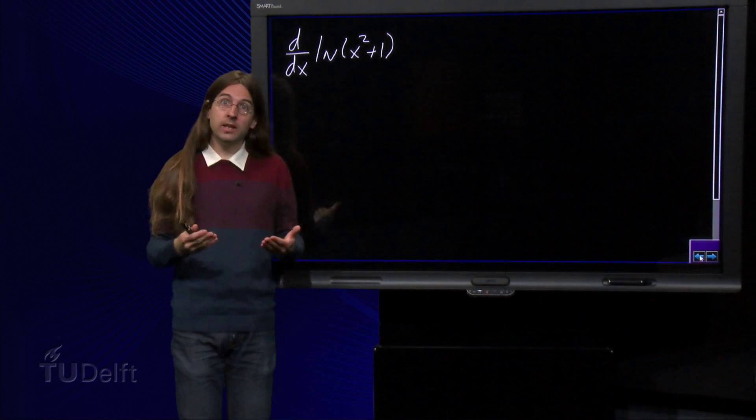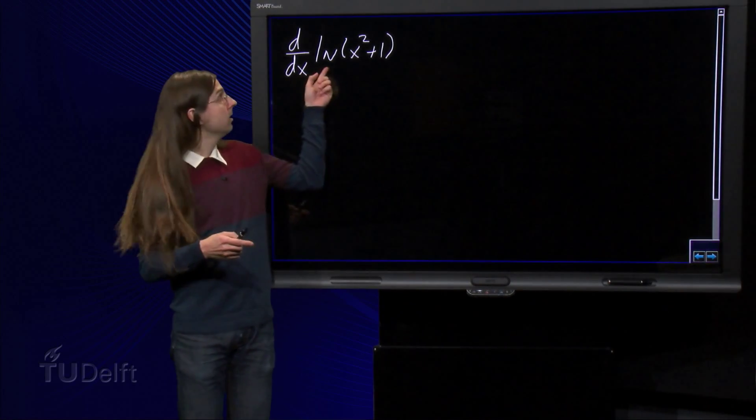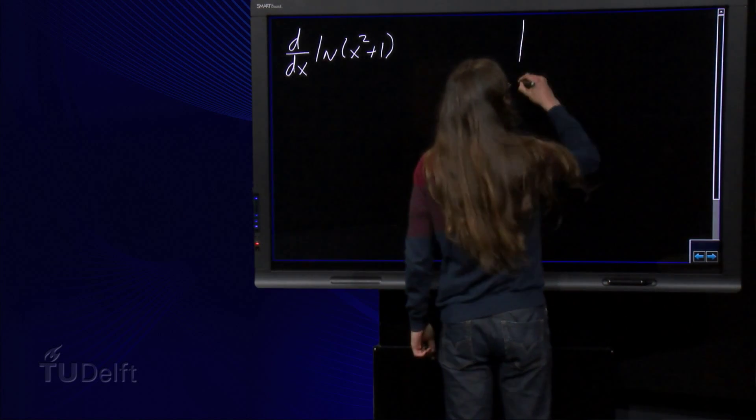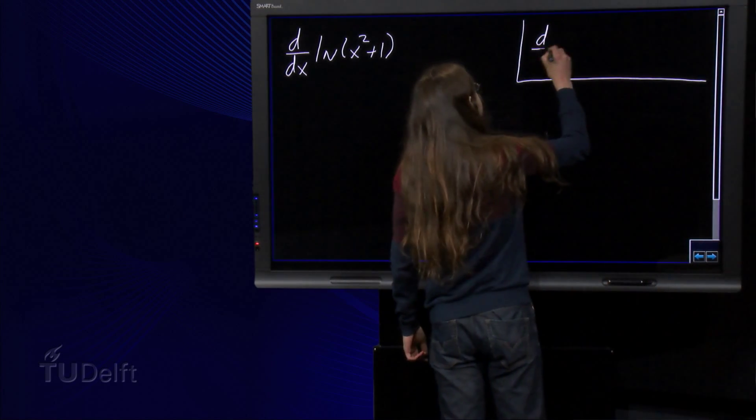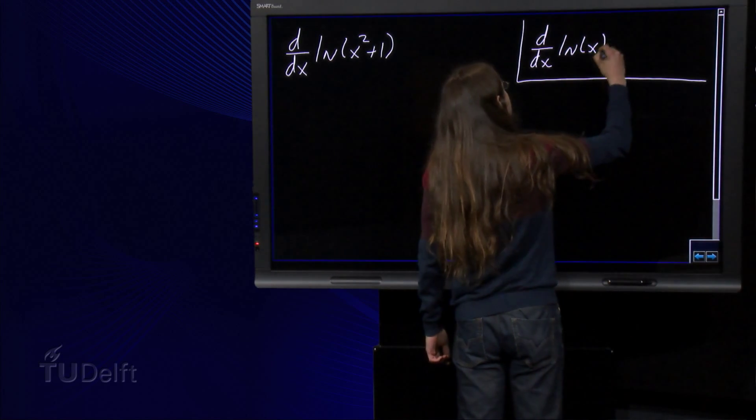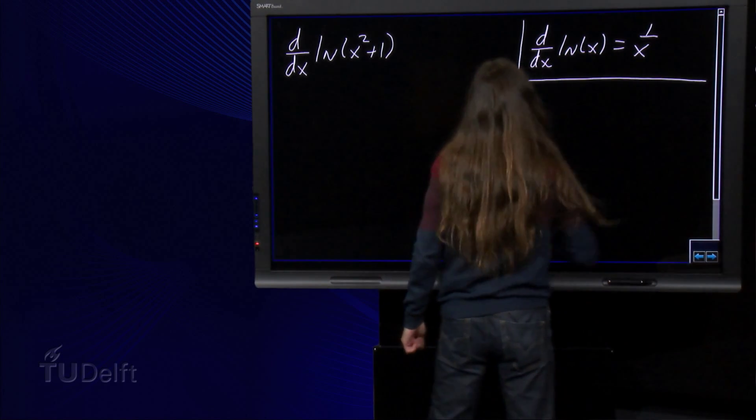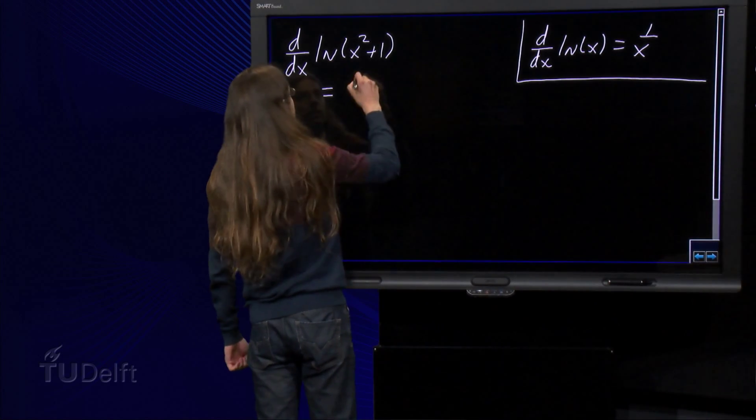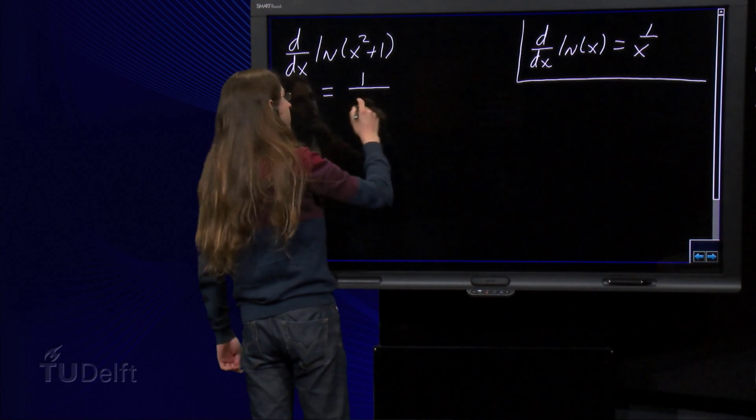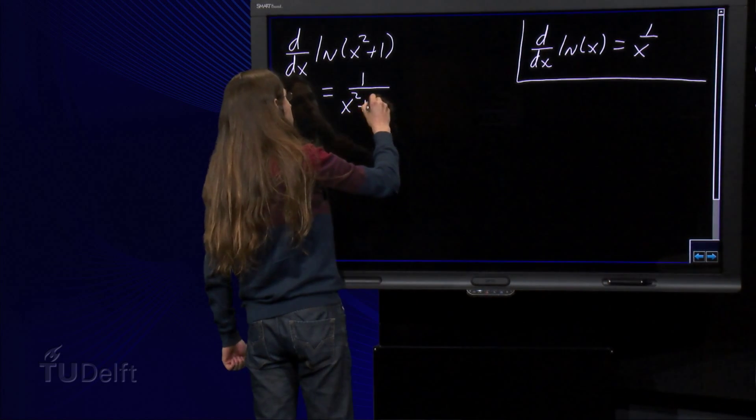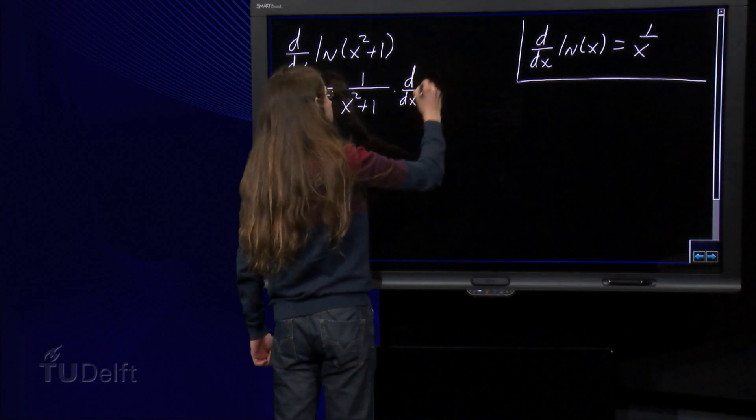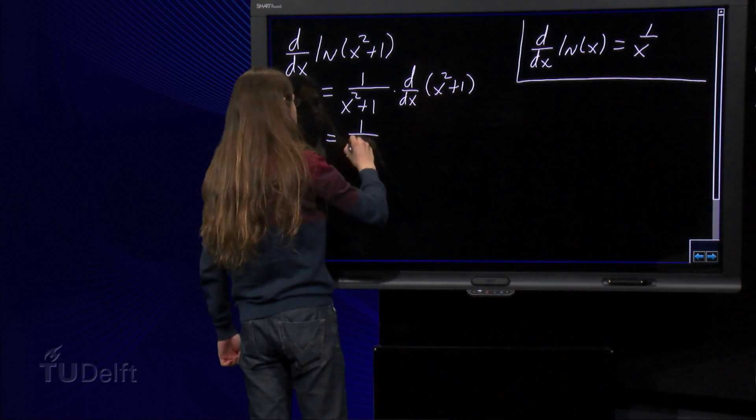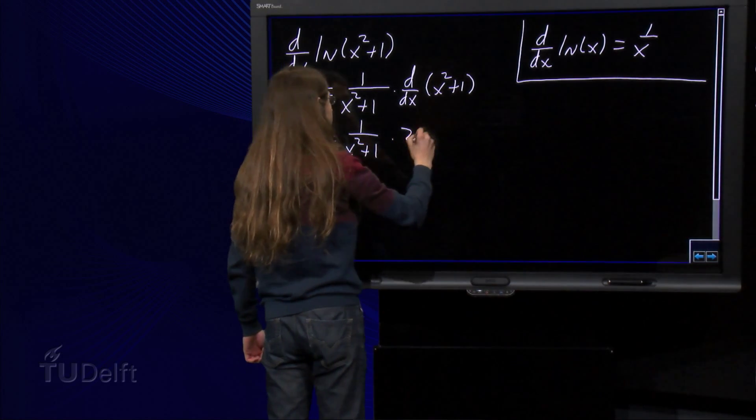As an example, we now calculate the derivative of ln. The derivative of the natural logarithm equals 1 over x. So we see for the derivative of ln that we obtain 1 over x evaluated at x² plus 1 times the derivative of x² plus 1, which is 1 over x² plus 1 times 2x.